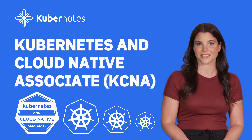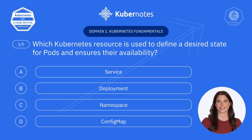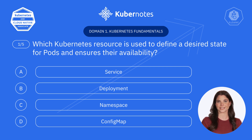Let's get started. Question one: Which Kubernetes resource is used to define a desired state for pods and ensures their availability? A. Service. B. Deployment. C. Namespace. D. ConfigMap.